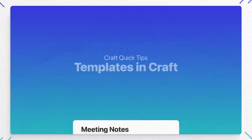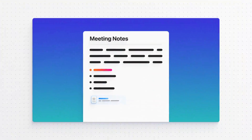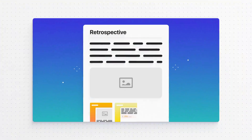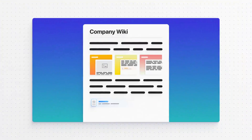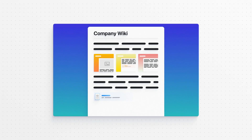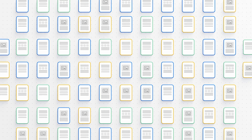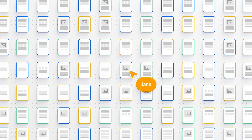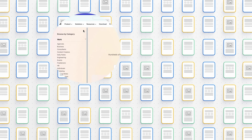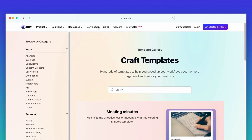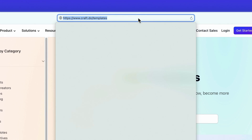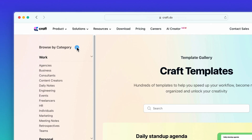Whether you need to take actionable meeting notes, run an effective retrospective, or build a company wiki, there are hundreds of Craft templates available to help you get started with any kind of document or project. To see the full collection of templates, head to craft.do/templates.